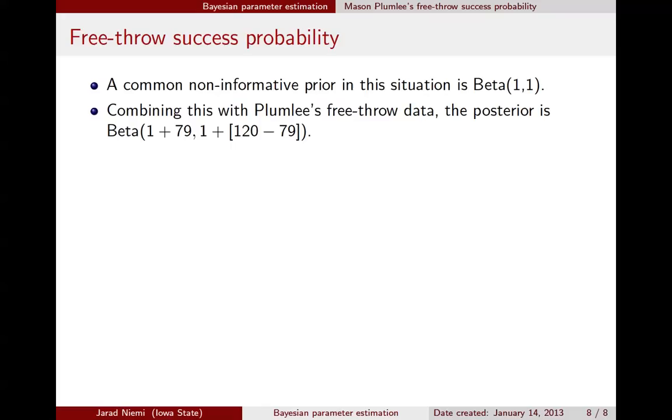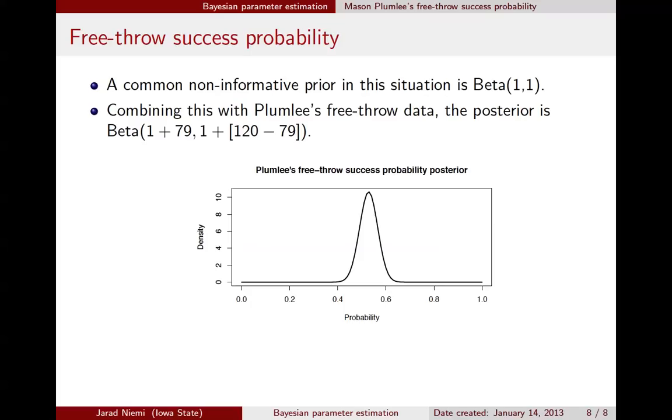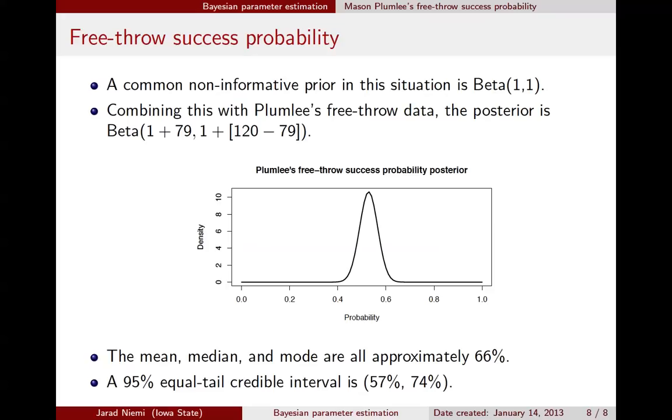Now that we have the posterior one thing we could do is we could actually just plot the posterior itself. So here is for example the free throw success probability posterior for Plumlee's data for 2012-2013 season up to the 14th of January. We could also create or calculate the mean, median, mode. These point estimates are all approximately 66%. In addition we could calculate a credible interval, for example a 95% equal tail credible interval which is 57 to 74%. So that's saying that if we think that Plumlee has a common free throw percent for the whole year and given the data that we have and our prior of a Beta(1,1), that the probability, there's 95% probability that his free throw success is between 57% and 74%.